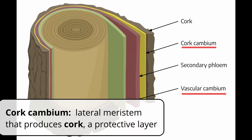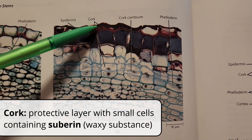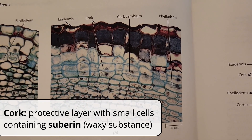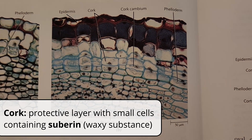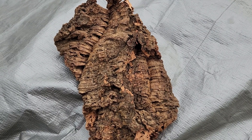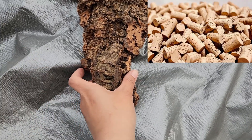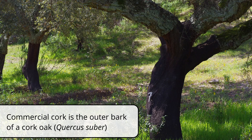The phloem typically just gets crushed, so it doesn't build up very much. The cork cambium is another lateral meristem found outside of the vascular cambium. It produces cork, which is a protective layer with suberin in it — a waxy substance that gives cork a waterproof quality. Cork in this sense is not the same as what we think of colloquially, like wine corks or cork boards, which are made specifically from the bark of a cork oak.